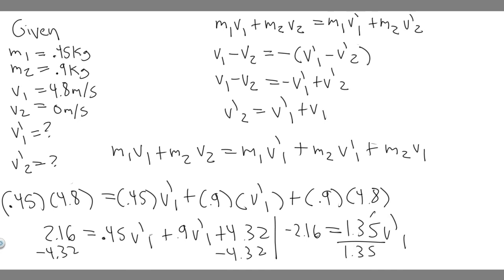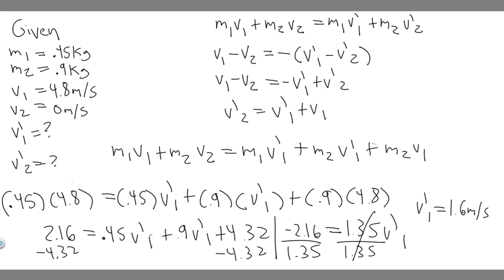We can solve for v'₁ by dividing both sides by 1.35: v'₁ = -2.16 ÷ 1.35 = -1.6 m/s. So v'₁ = -1.6 meters per second. The negative sign is important — we need to include that. Now we still need to find v'₂ because they want the answer for both objects.